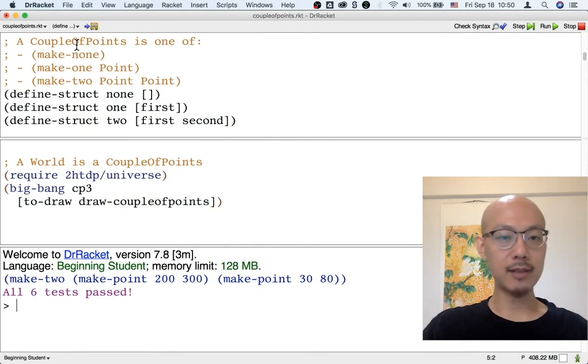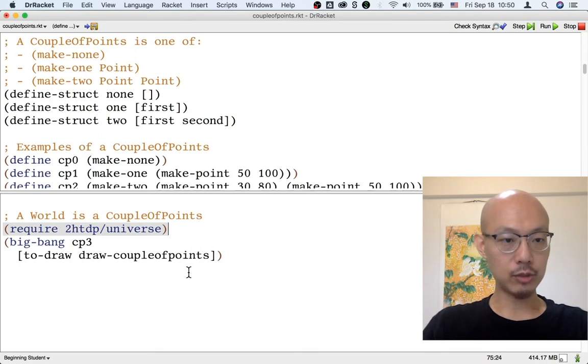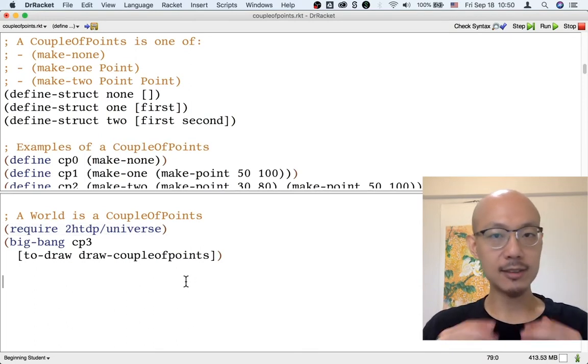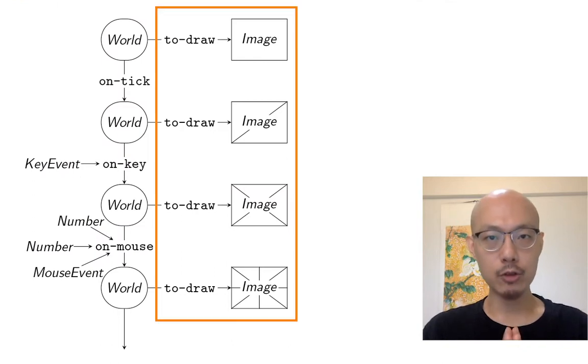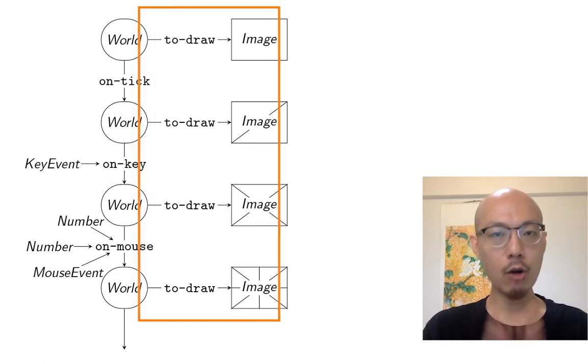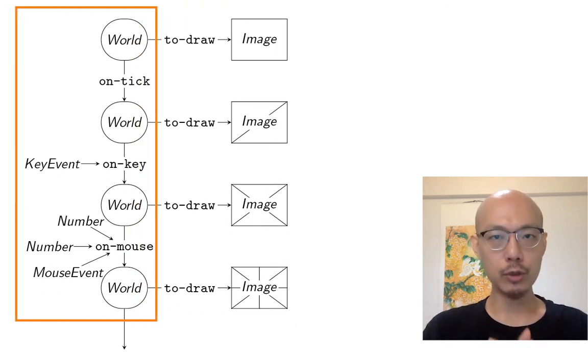Let's make things more interesting. Let's make the points move up as time passes by. So for that, we need to write a new function. We need to design a function that does not return an image. In fact, the only function when you make a Big Bang animation that returns an image is the draw function. All the other functions don't return images, but rather return worlds. In other words, a couple of points here.